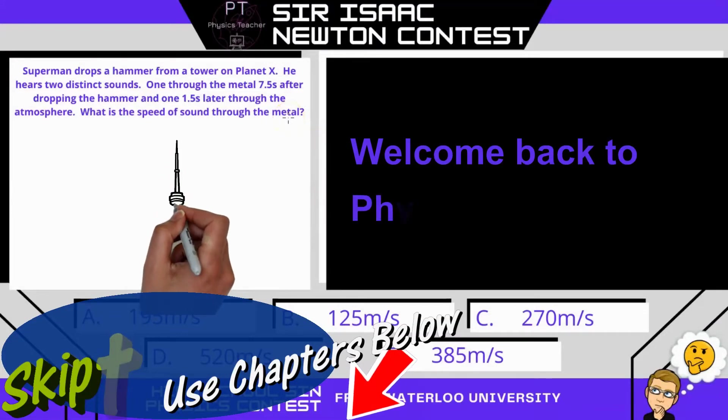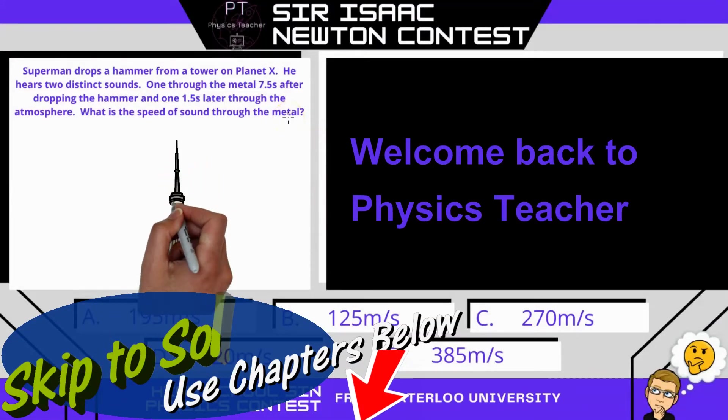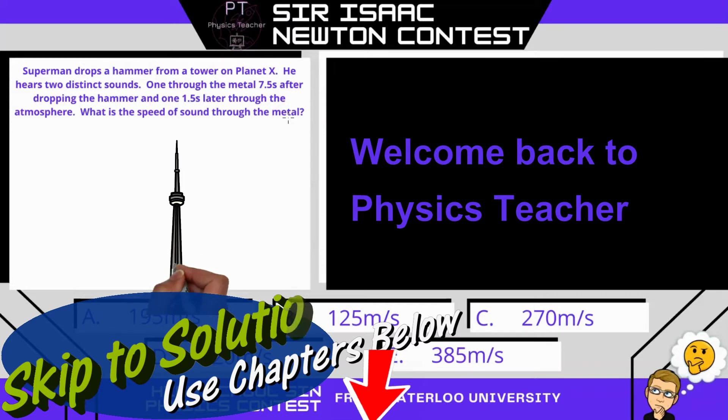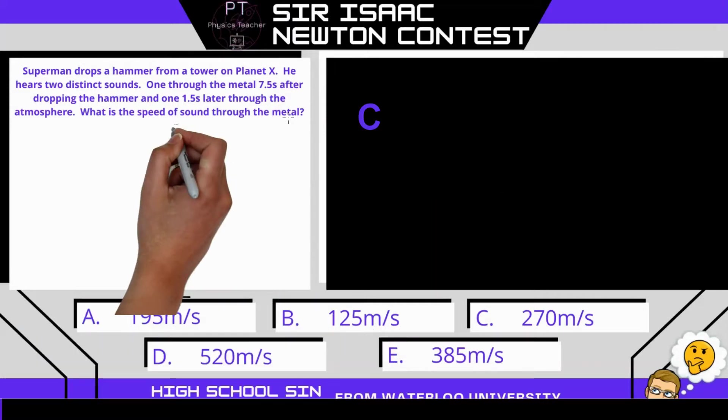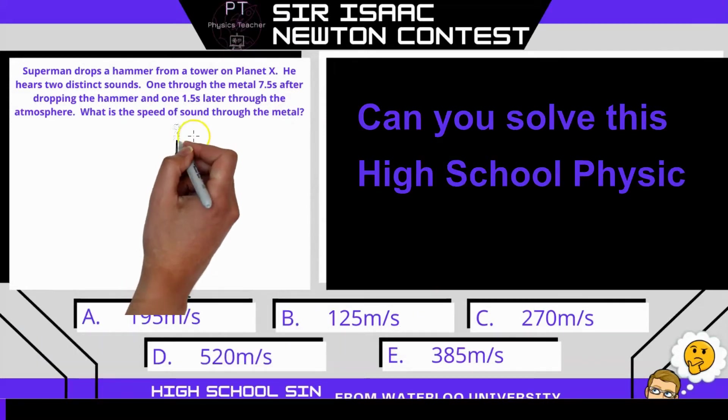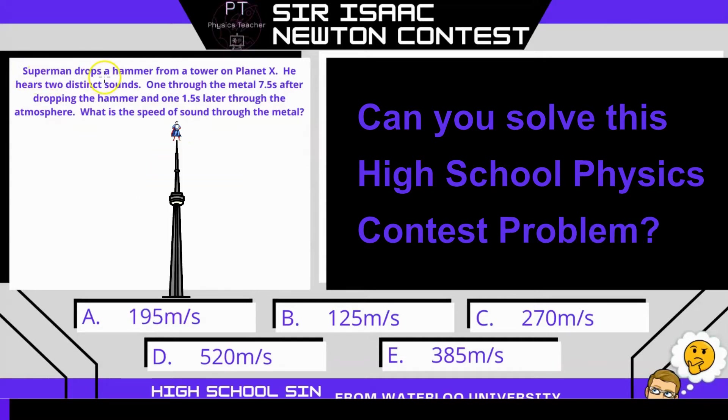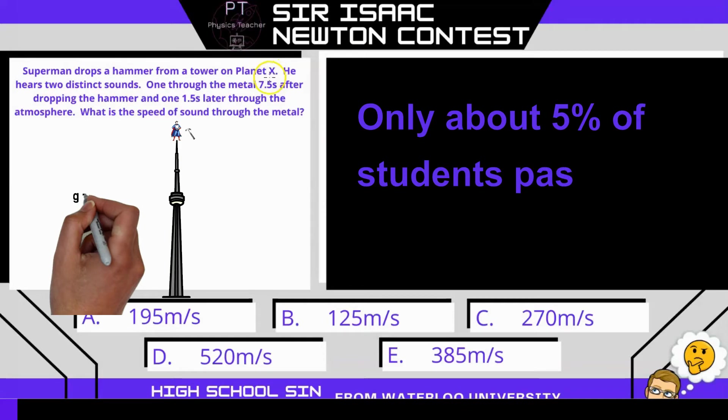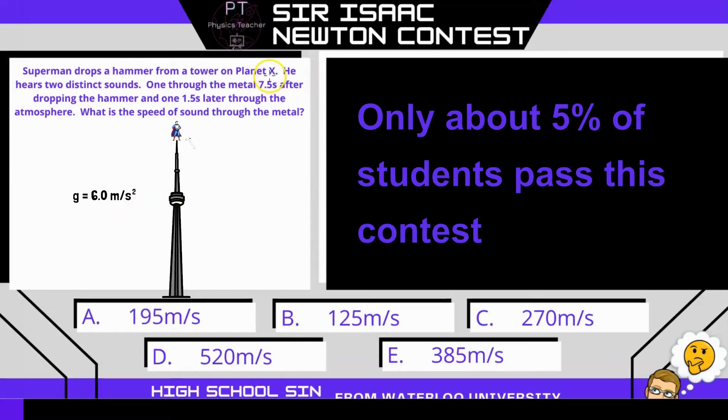Hi, welcome to Physics Teacher, the channel that prepares you for the Waterloo Math and Science Contest. This is a Grade 12 Physics Sir Isaac Newton Contest question, and in it we have Superman, who drops a hammer from a tower on planet X, where the gravitational field strength is 6 meters per second squared.